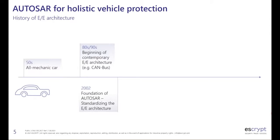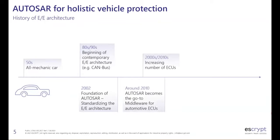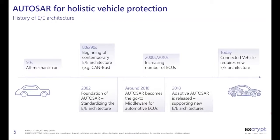The increasing number of ECUs was addressed by the automotive industry by founding the AUTOSAR consortium in 2002. AUTOSAR's goal was to provide a standardized middleware for this growing number of ECUs and to standardize the E/E architecture. The number of ECUs continued to increase and AUTOSAR became the go-to middleware for automotive ECUs. Today the E/E architecture is changing again due to new use cases like connected vehicles and automated driving, addressed by Adaptive AUTOSAR, released in 2018.